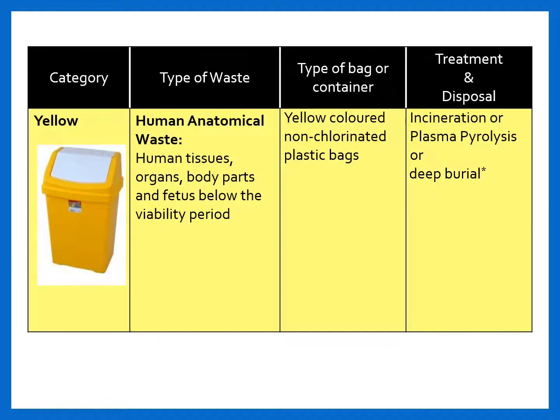The waste generated is segregated in four different color-coded bins. The first one is yellow. The types of waste that go in the yellow bin include human anatomical waste — primarily human tissues, organs, body parts, fetus below viability period, etc. The type of bag or container is yellow colored non-chlorinated plastic bags, and the final method of treatment and disposal is incineration, plasma pyrolysis, or deep burial in facilities without access to a common treatment facility.